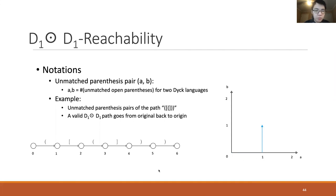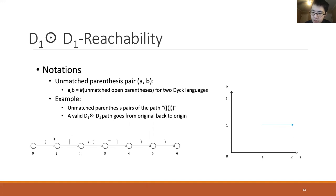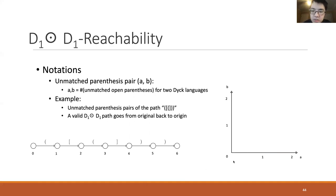Going through an open bracket edge, the pair becomes (1, 1). At position 3 it becomes (2, 1). Because the fourth edge is a close bracket, it cancels one previous open bracket, so the pair at position 4 becomes (2, 0). After going through the last two edges, the path returns to the origin at the last position. Since the unmatched parentheses pair never goes negative, it indicates that the path is a D1D1 path.